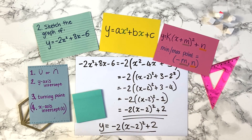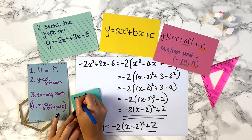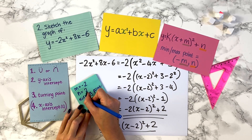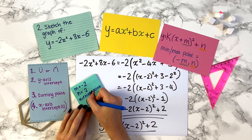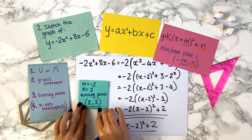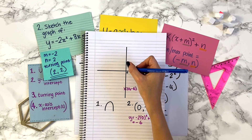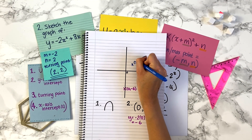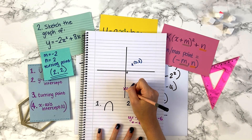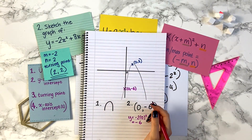From the completed square form, m is minus 2 and n is 2. The turning point is at (−m, n), which is (−(−2), 2) = (2, 2). Because we have the sad negative shape, it's a maximum point. Let's mark (2, 2) on the graph. The graph passes through (0, −6) and turns at (2, 2), so it looks like this inverted U shape.